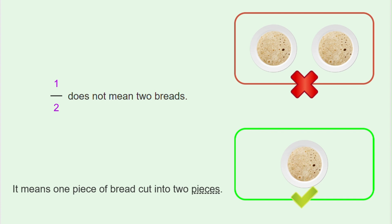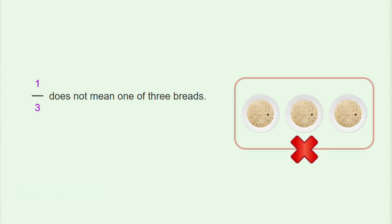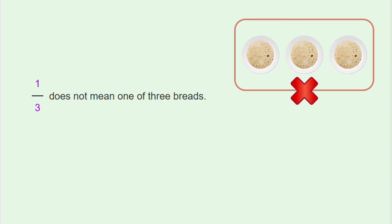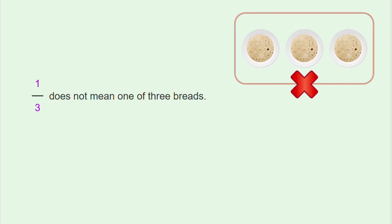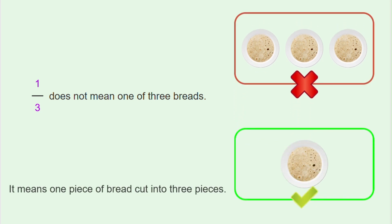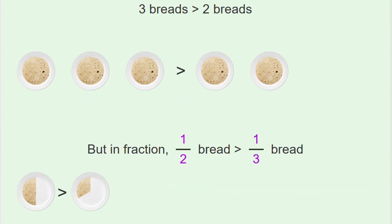One by three does not mean one of three breads — it means one piece of bread cut into three pieces. Three breads is greater than two breads, but in fractions, one by two is greater than one by three.